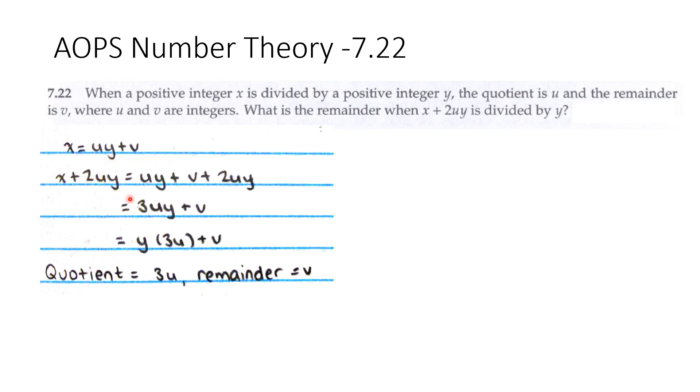That means x + 2uy = uy + v + 2uy, which equals 3uy + v, which equals y(3u) + v. So when x + 2uy is divided by y, the quotient is 3u and the remainder is v.